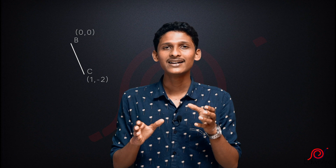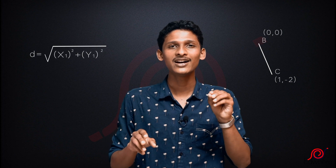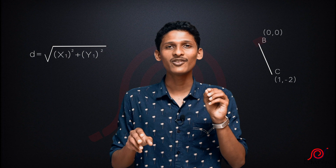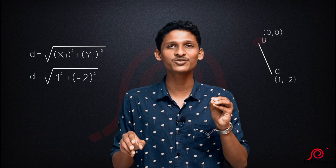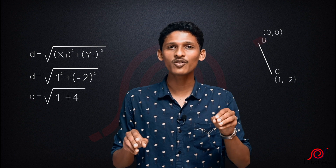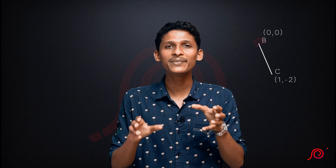Now we have the length of BC. Point B is (0, 0) and point C is (1, -2). One point is the origin and the other is a normal point, so we use the same formula: distance = root of (x1² + y1²). Substituting: root of (1² + (-2)²) = root of (1 + 4) = root 5. That distance BC is equal to root 5.